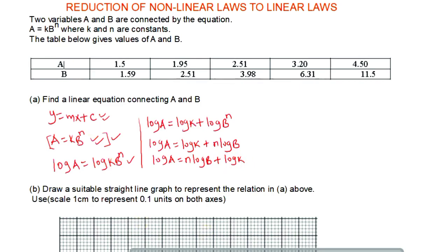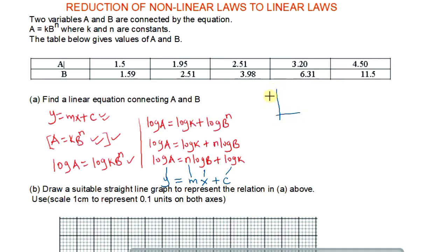This expression is already in the form y equals mx plus c. Comparing, logarithm of a corresponds to y, n corresponds to m (the gradient), logarithm of b corresponds to x (the independent variable), and log k corresponds to c (the y-intercept). So we plot y against x — in this case, the dependent variable is logarithm of a and the independent variable is logarithm of b.